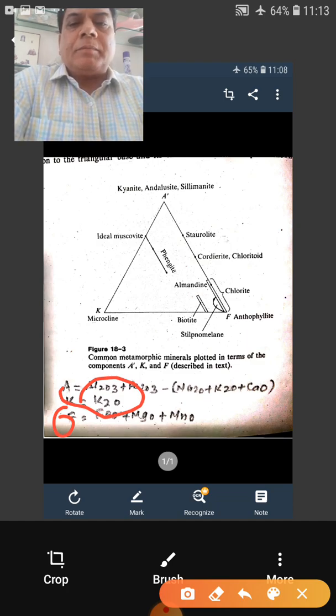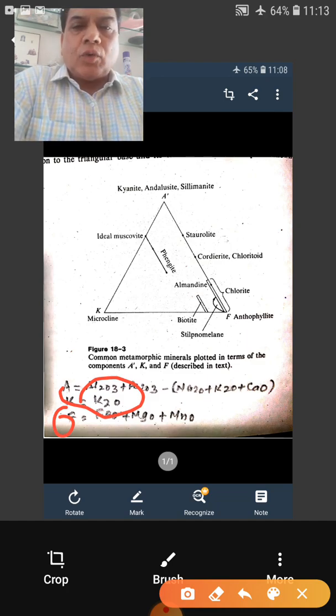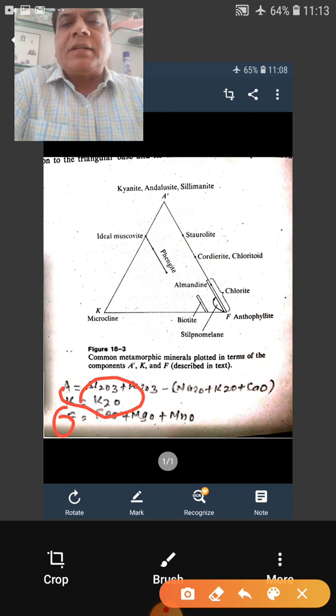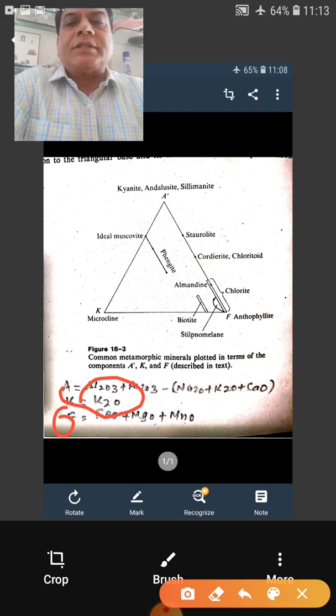The AKF diagram was given by Eskola and you will be given the chemical composition of a metamorphic rock and also its modal analysis for the accessory minerals. Similar to ACF diagram, first step will be that you will correct for the accessory minerals.